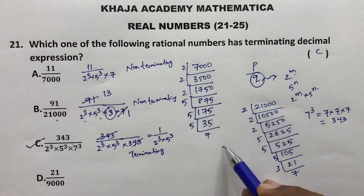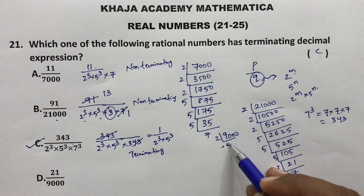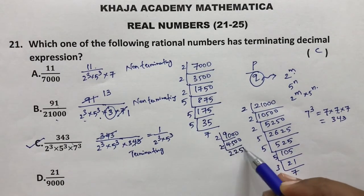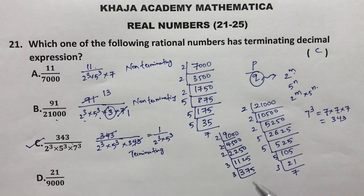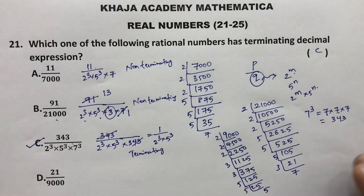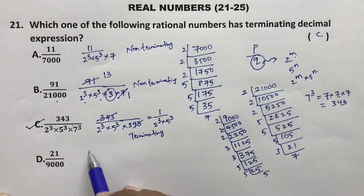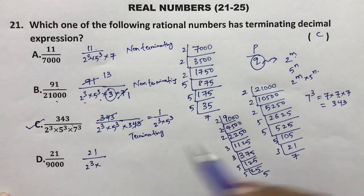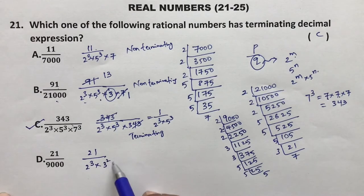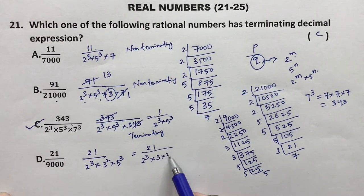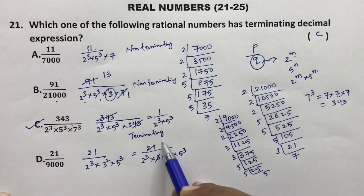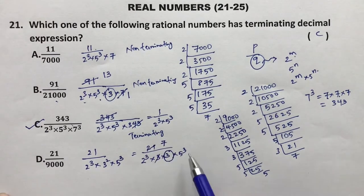Also checking 21 by 9000 for completeness. Prime factors of 9000: 2 × 4500, 2 × 2250, 2 × 1125, 3 × 375, 3 × 125, 5 × 25, 5 × 5. So 9000 = 2³ × 3² × 5³. For 21 = 3 × 7, we still have an extra 3 in the denominator, so it is non-terminating. This confirms the correct option is C.